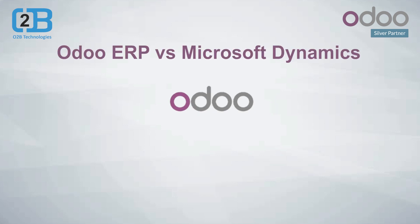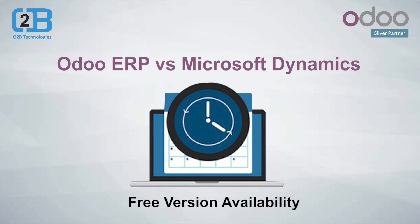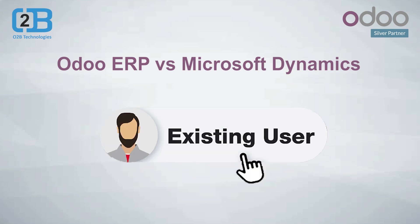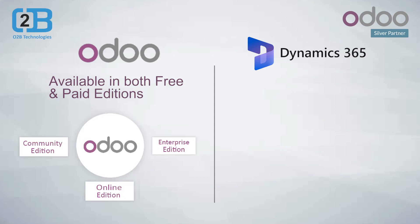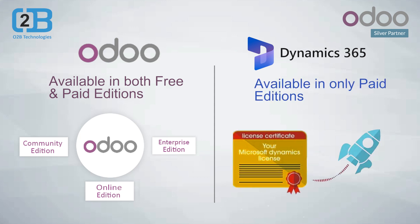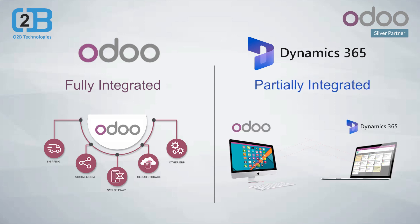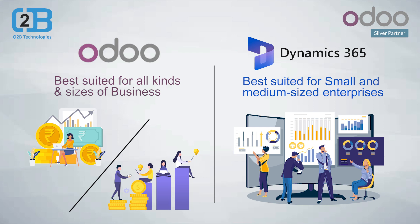Odoo ERP versus Microsoft Dynamics. Odoo ERP and Microsoft Dynamics are quite different from each other in terms of free version availability, integration, target audience, add-ons, license fee for on-premise, and existing users. Odoo is available in both free and paid editions — Community, Enterprise, and Online editions respectively. Microsoft Dynamics is available only in paid editions like Dynamics 365. Odoo is fully integrated into all of its modules and third-party applications, while Microsoft Dynamics is not as integrated as Odoo. Odoo is designed for all sizes of business; small and medium-sized enterprises can benefit from Microsoft Dynamics NAV majorly.